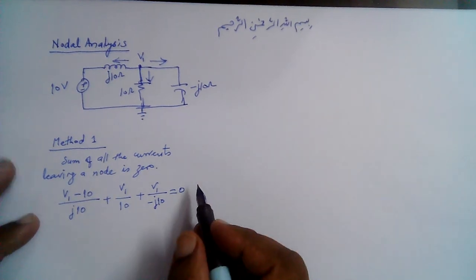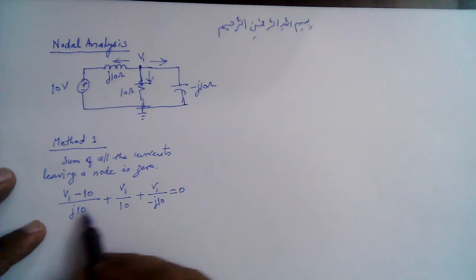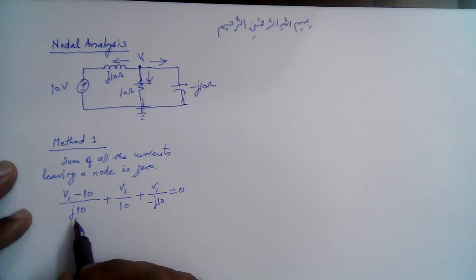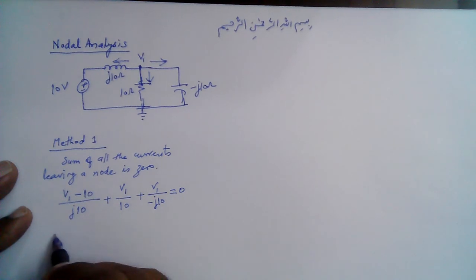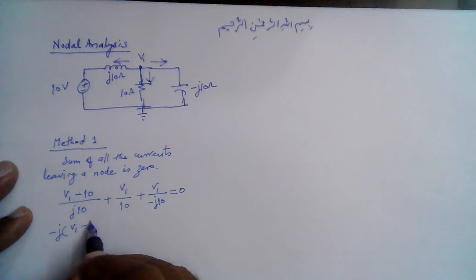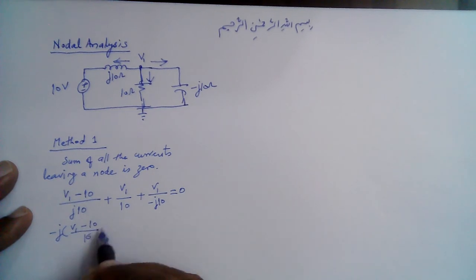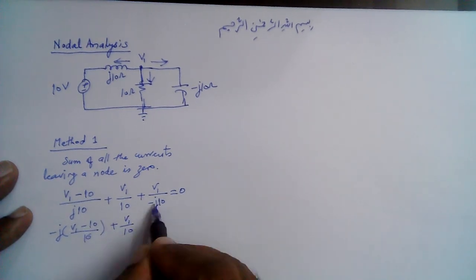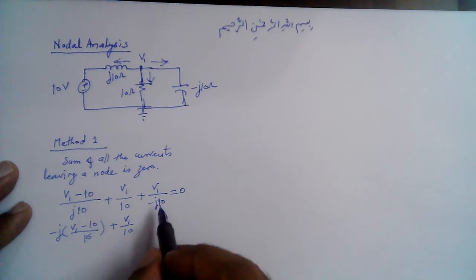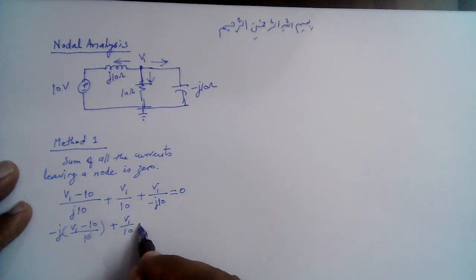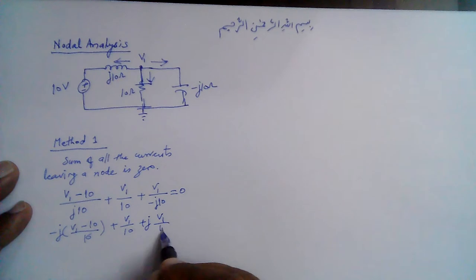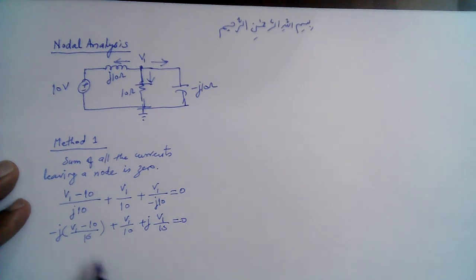Since this equation involves imaginary numbers, we bring the j values into the numerator. Recall that 1/j equals −j, so the equation becomes: (−j)(V1 − 10)/10 + V1/10 + (j·V1)/10 = 0. Multiplying the whole equation by 10 gives: −j(V1 − 10) + V1 + jV1 = 0.